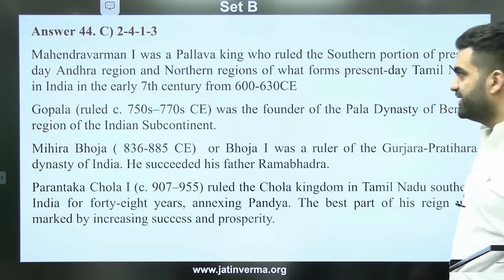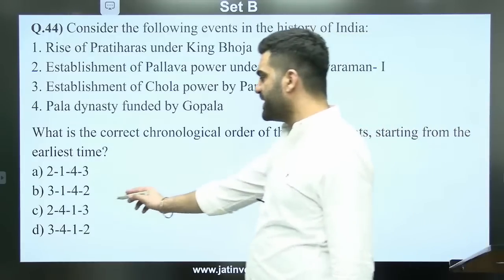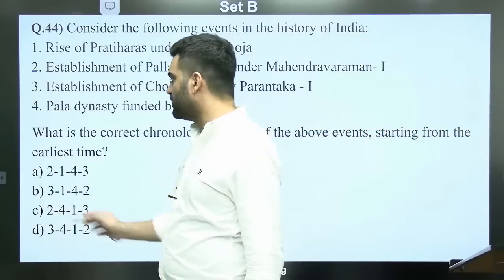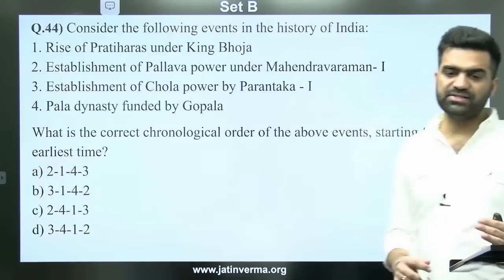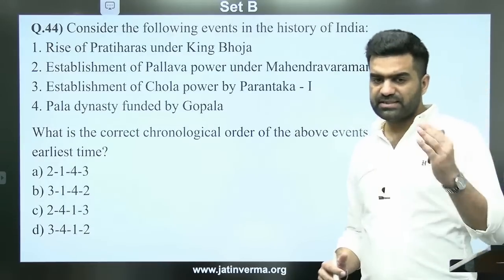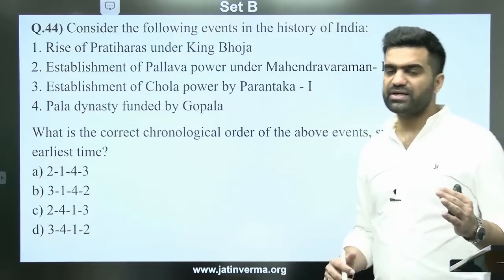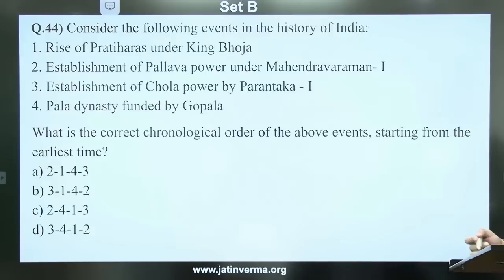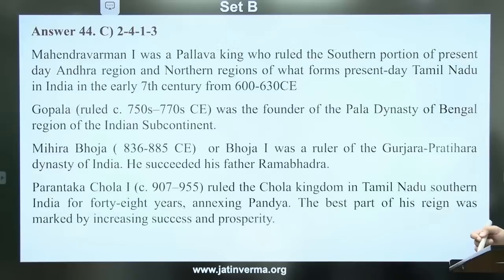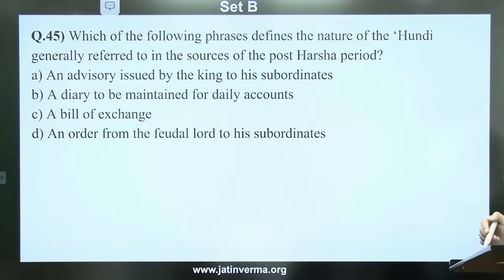The answer to question 44 is C — the chronological order is 2, 4, 1, and 3. UPSC normally does not ask chronological sequencing questions, but this year was an exception. This is one of the rare times such questions appeared in the last one or two years.